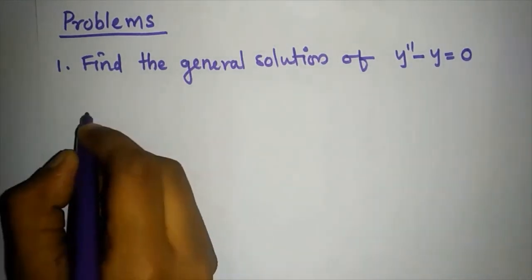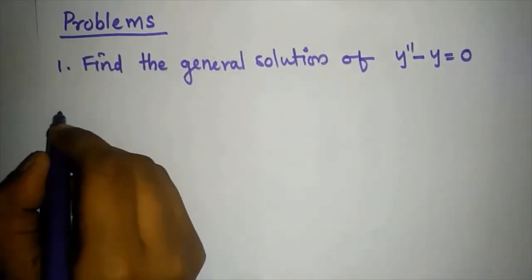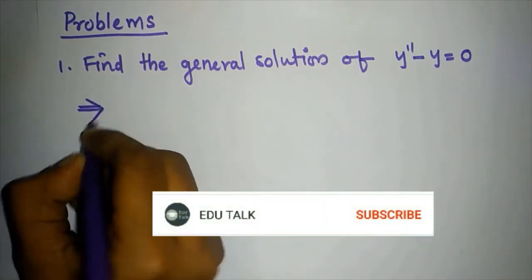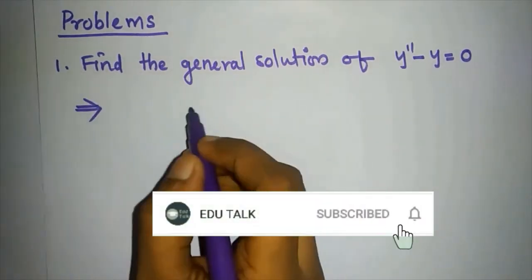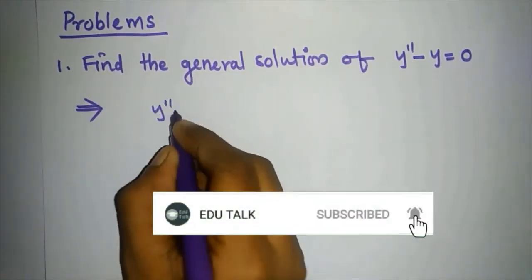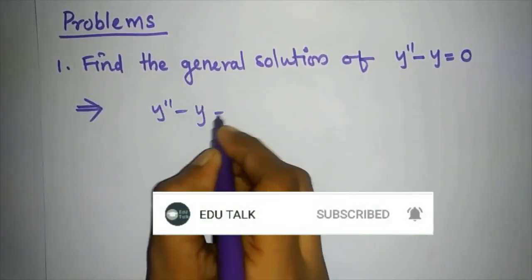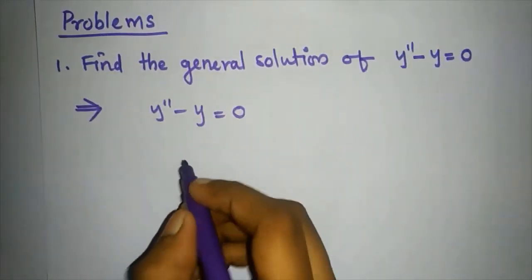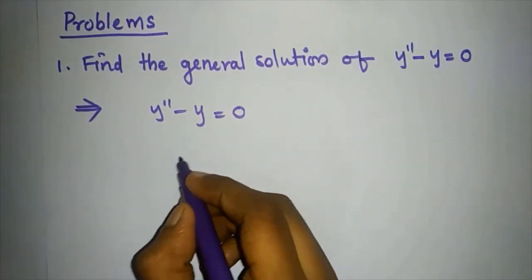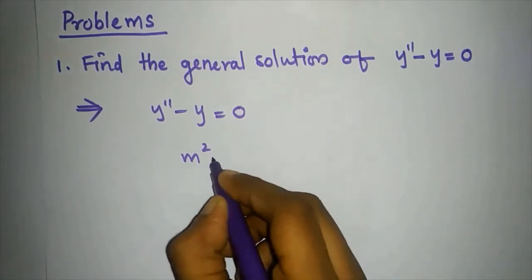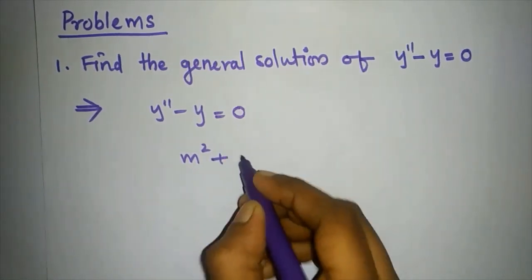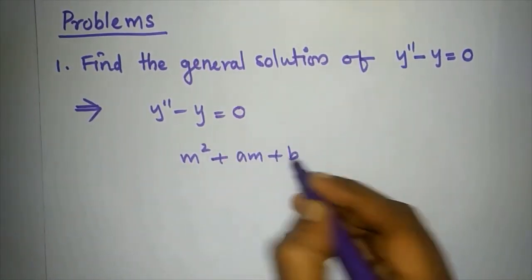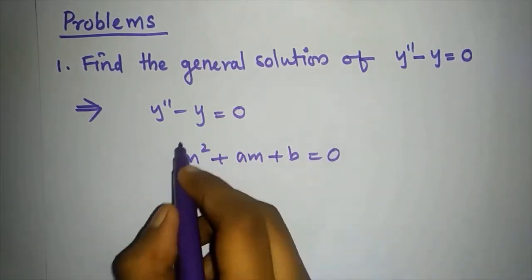Find the general solution of y'' minus y equals 0. The equation is y'' minus y equals 0. The characteristic equation has the form m squared plus a·m plus b equals 0.